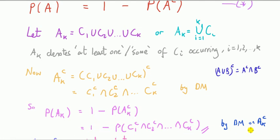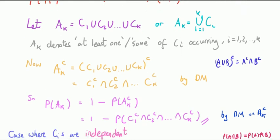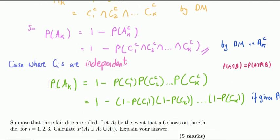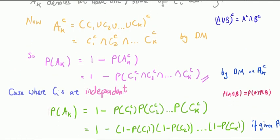Now I substitute that into there, and that's the proof. There is a case where we have experiments where the individual components of the events—each of the Ci's—are independent. In that case we can simplify the right-hand side further, and I've done it here in green.